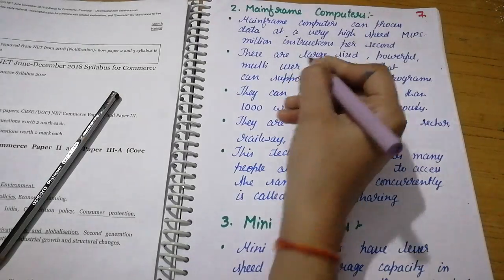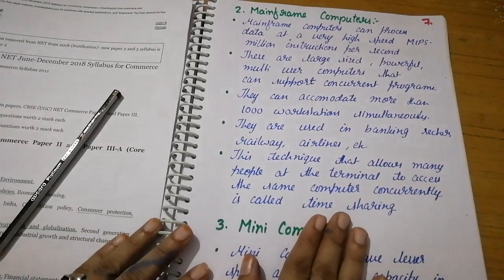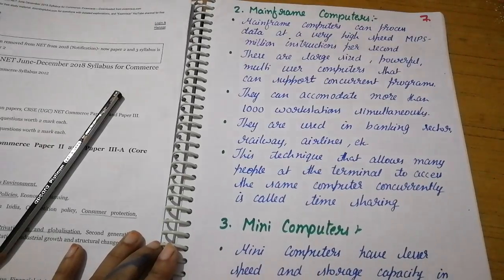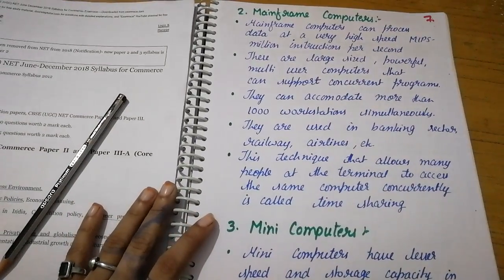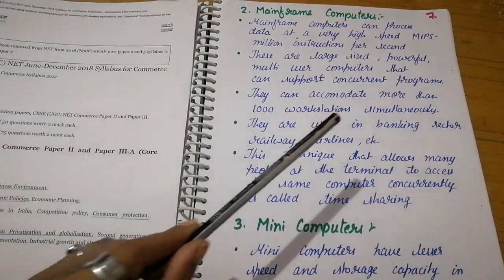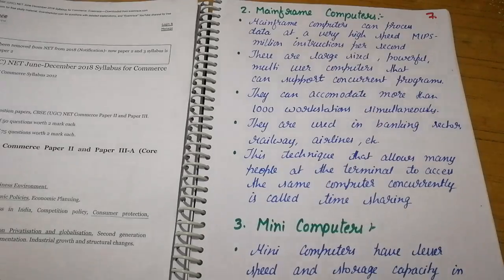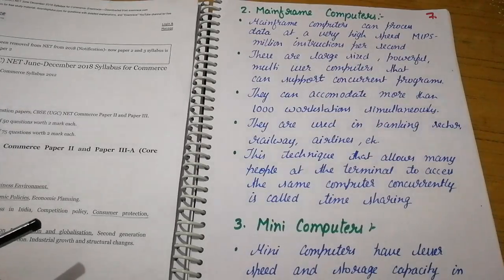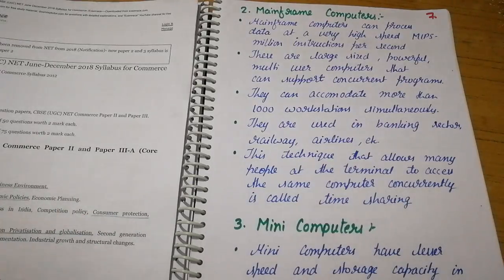Mainframe computers can process data at very high speed - MIPS, million instructions per second. These are large-sized, powerful multi-user computers that can support concurrent programs. They can accommodate more than 1000 workstations simultaneously. They are used in banking sector, railways, airlines, etc. The technique that allows many people at terminals to access the same computer concurrently is called time sharing. Banking sector computers are connected with each other through wireless technologies.